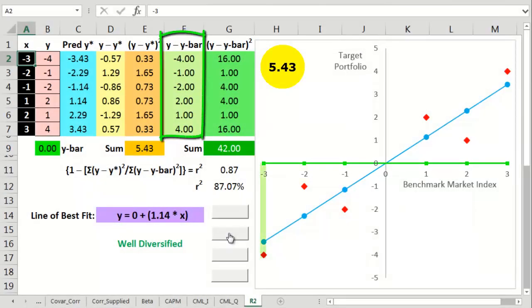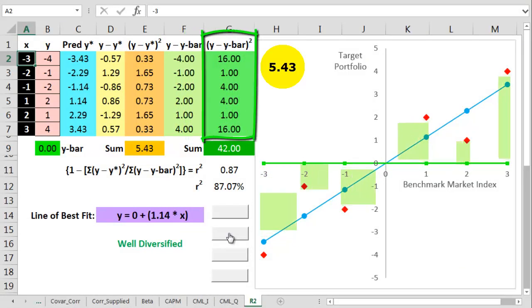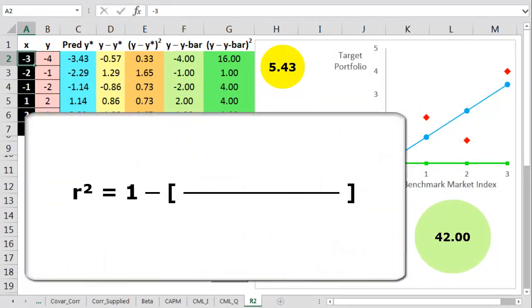Next up, we figure out the difference between every actual y value and this average y value. We then square those figures, then add them up into another funky sum. And now the magic gets real.